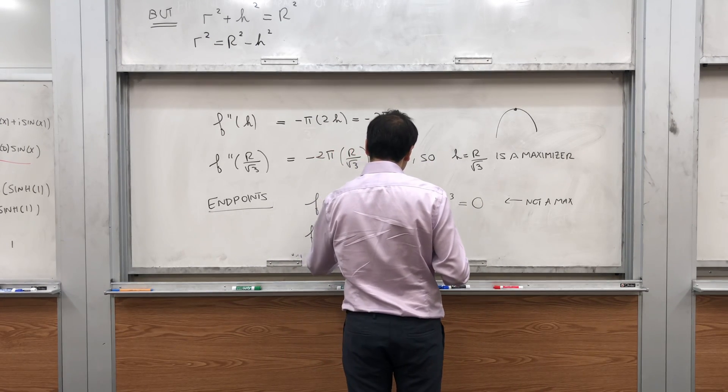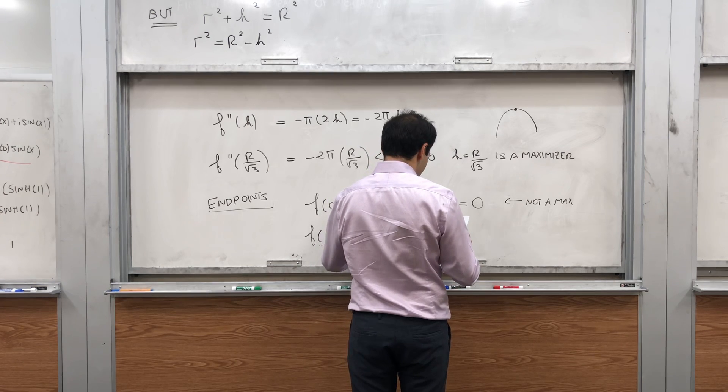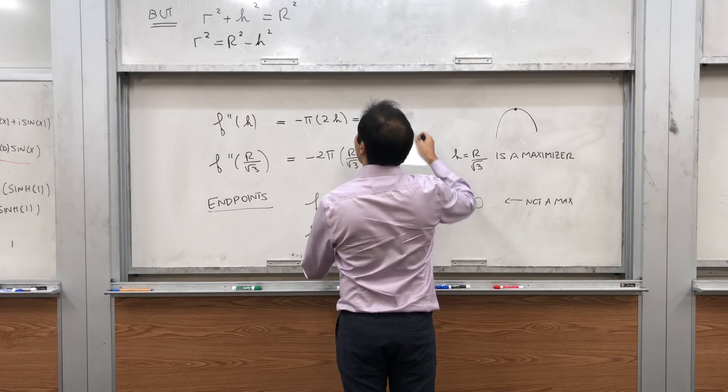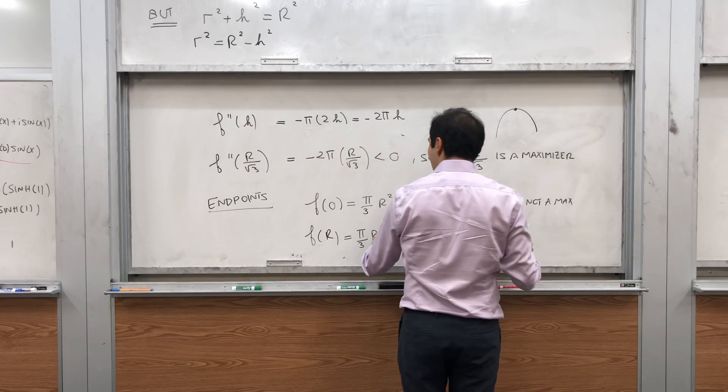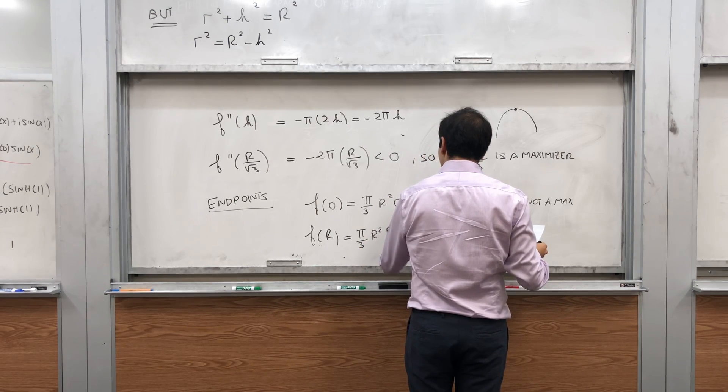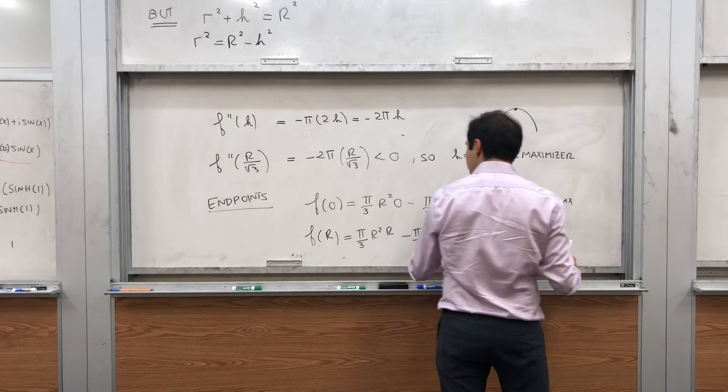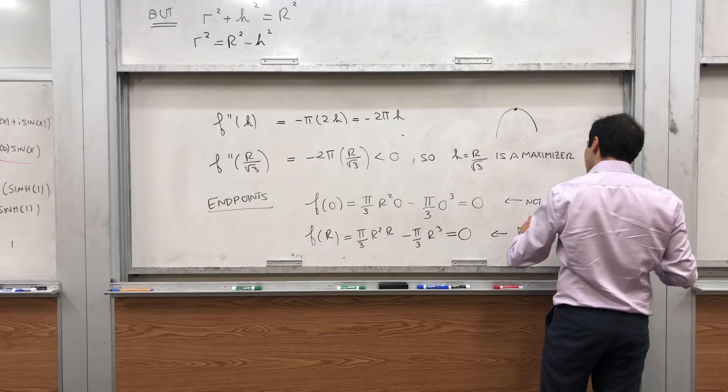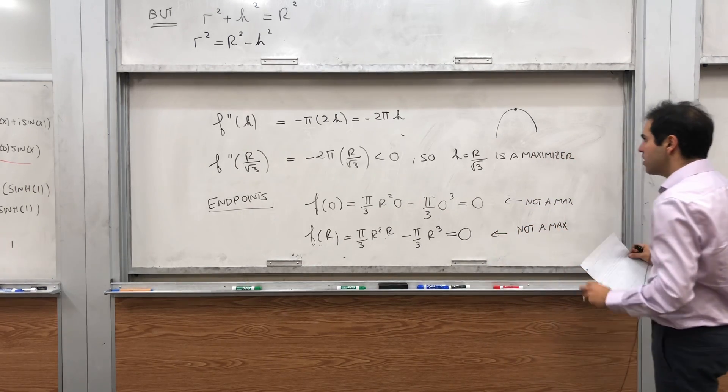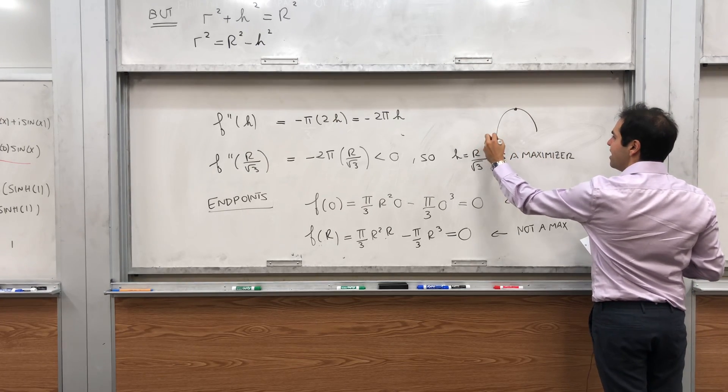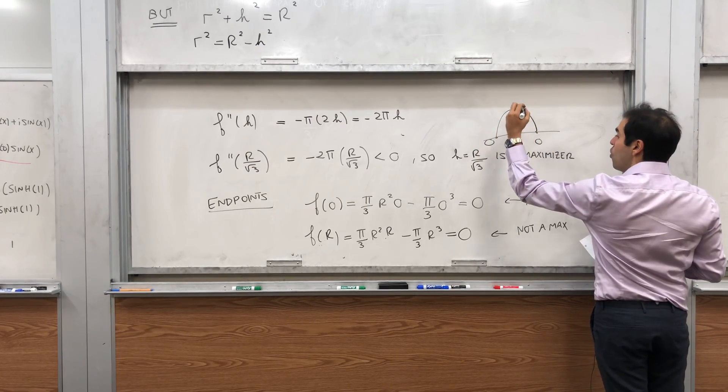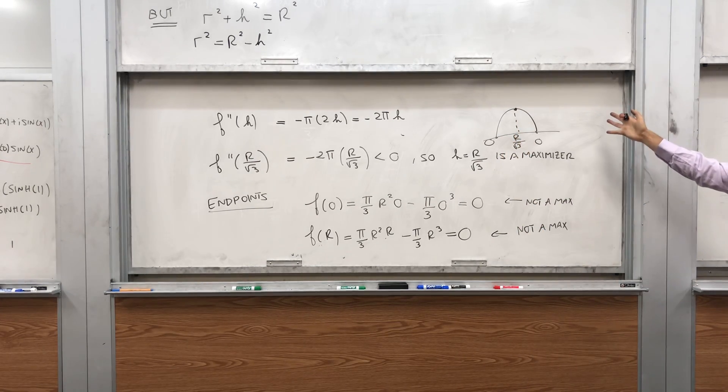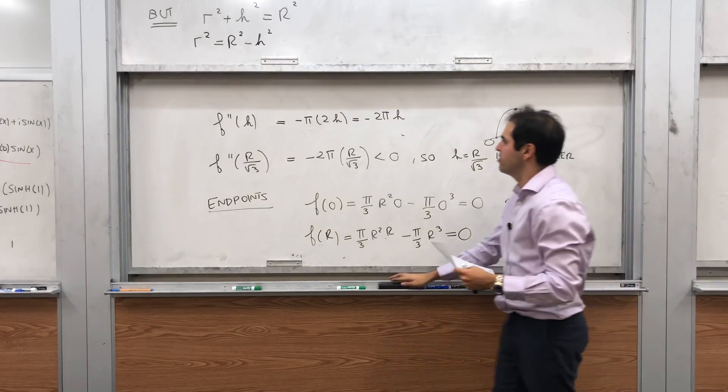And also f of capital R, so it's pi over 3 r squared r minus pi over 3 r cubed. And that becomes pi over 3 r cubed minus pi over 3 r cubed, which is also 0. So it's also not a max. Which essentially means the function looks like that. It's 0 here, it's 0 here, and it has a local maximizer at r over square root of 3. And therefore, at this point, we indeed have a max. So it becomes an absolute maximum.